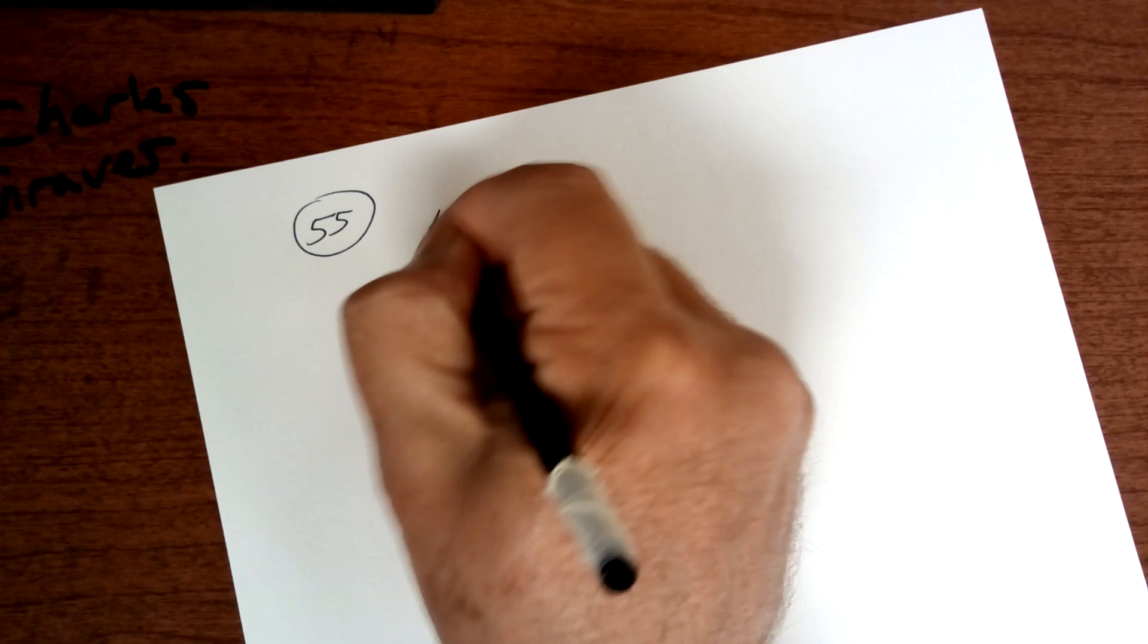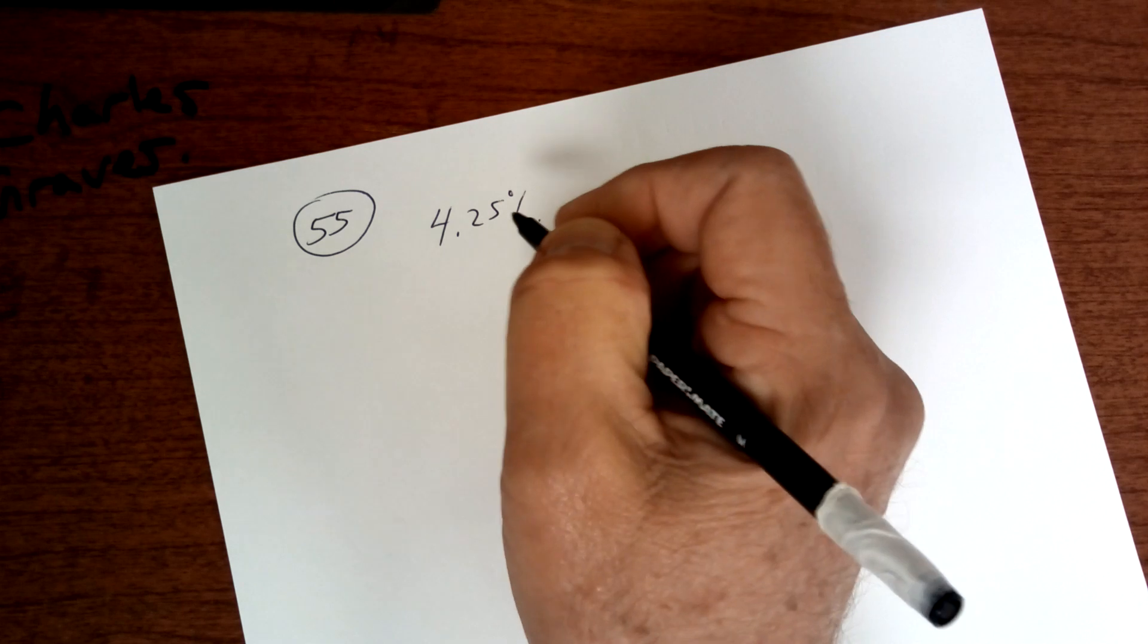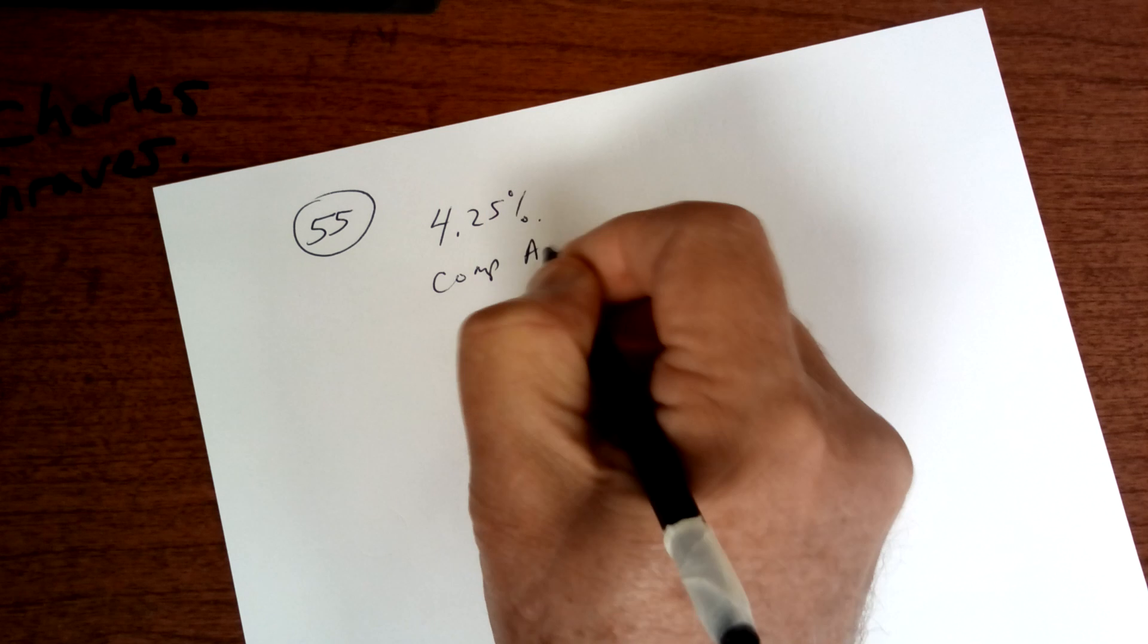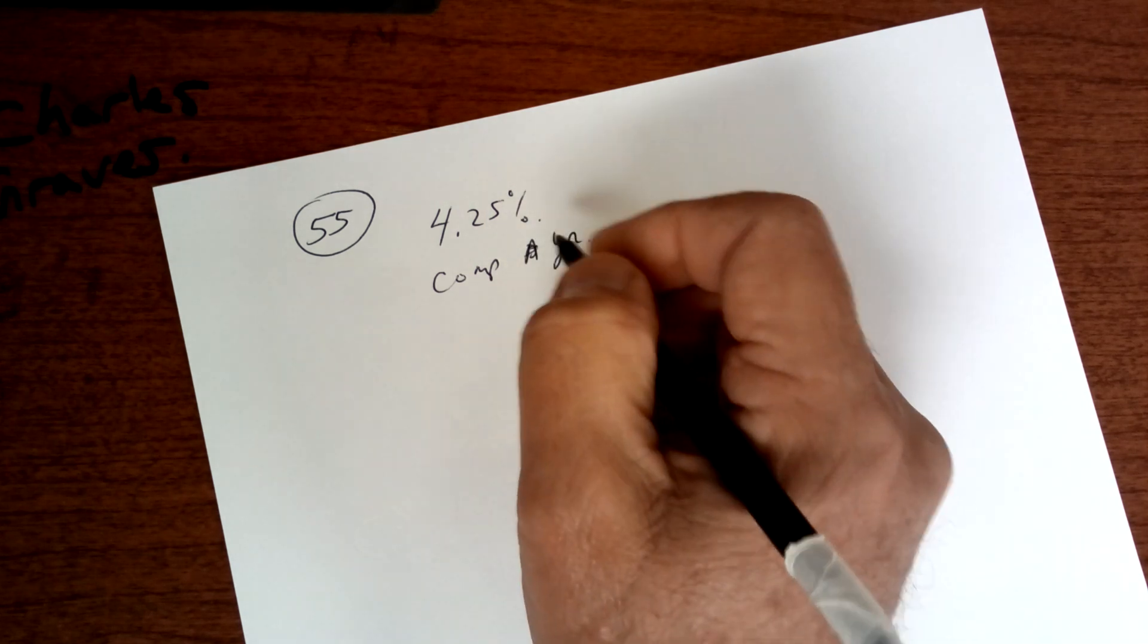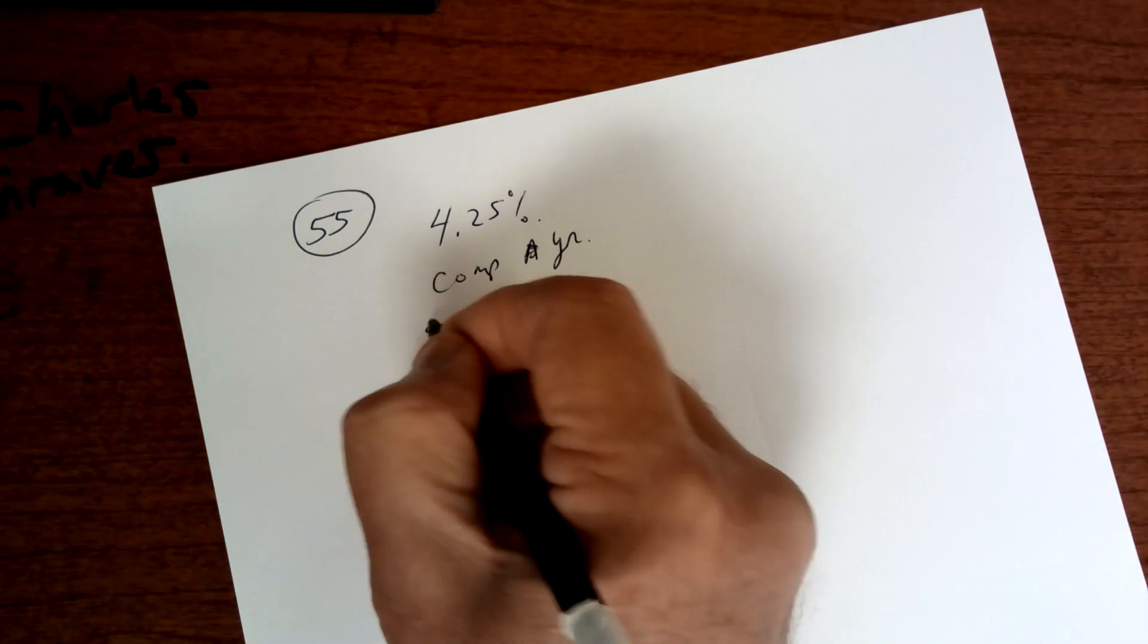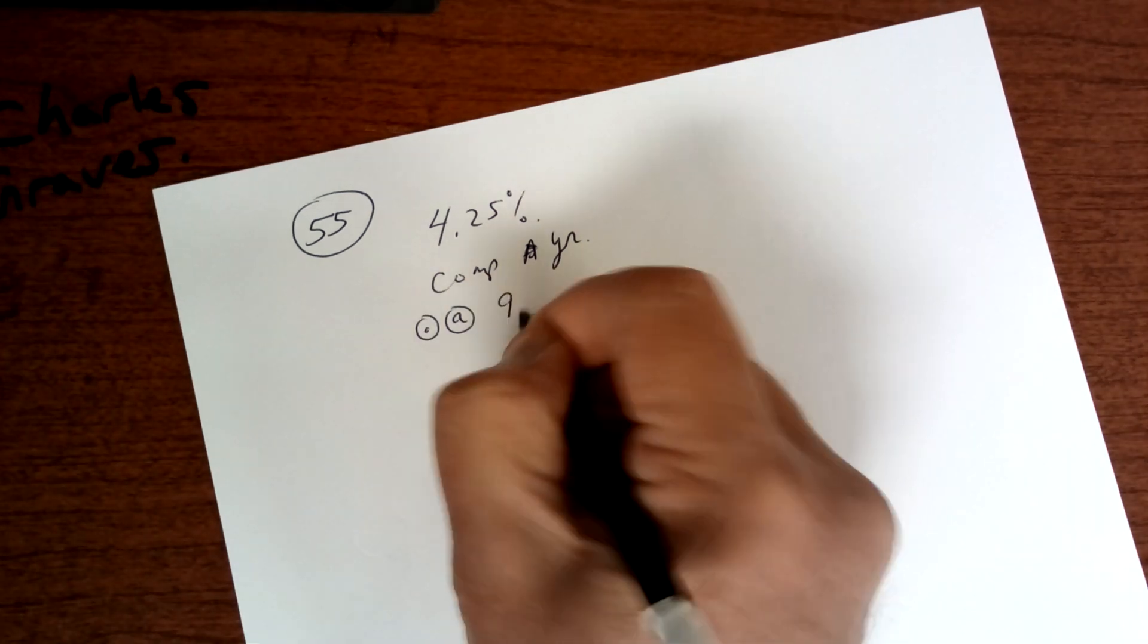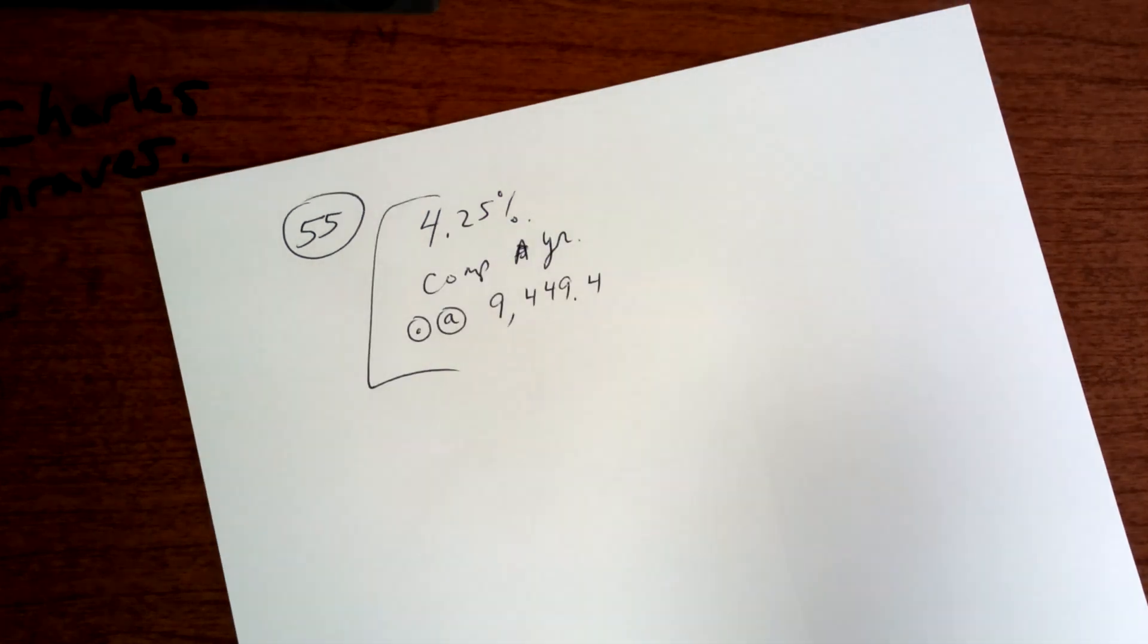Okay, so this one is a money market at 4.25%, and it's compounded annually or yearly. I'm going to give you the answer here. This one is A, and that is $9,449.40. So you're going to memorize that one. There's a compound formula, but I'm going to give you that one. 56.